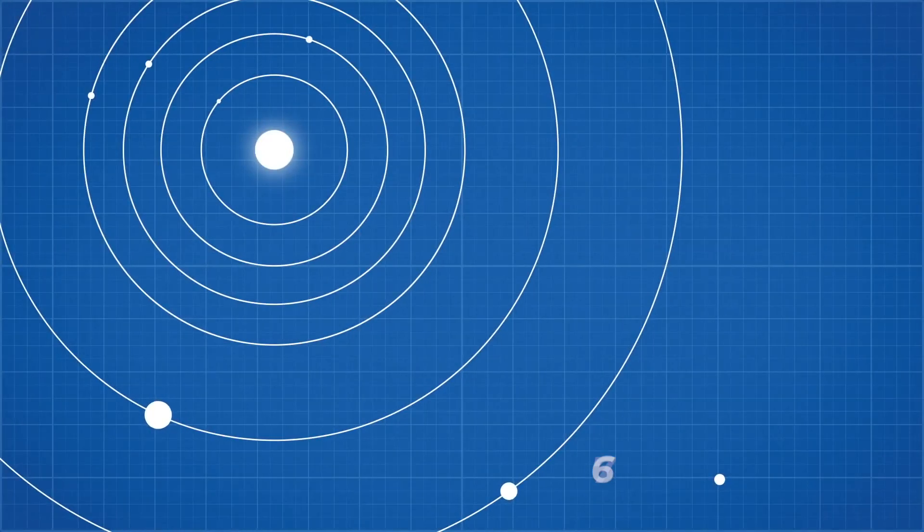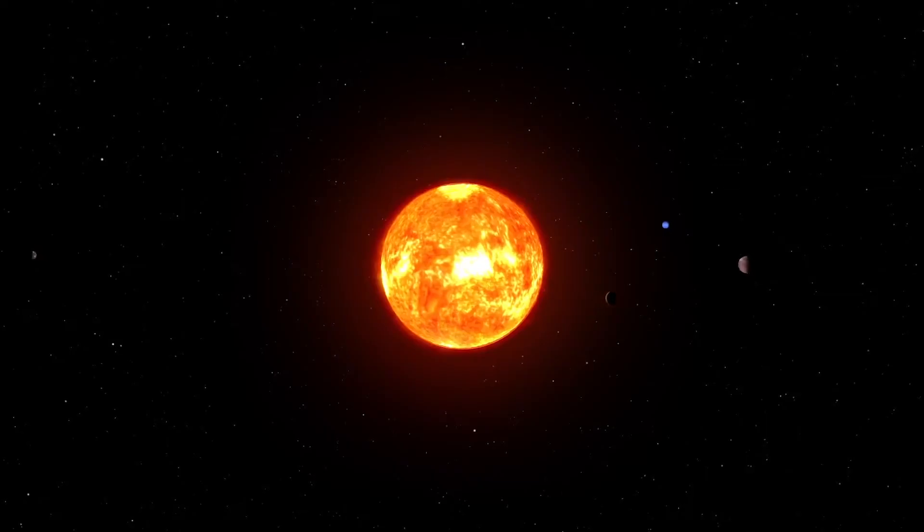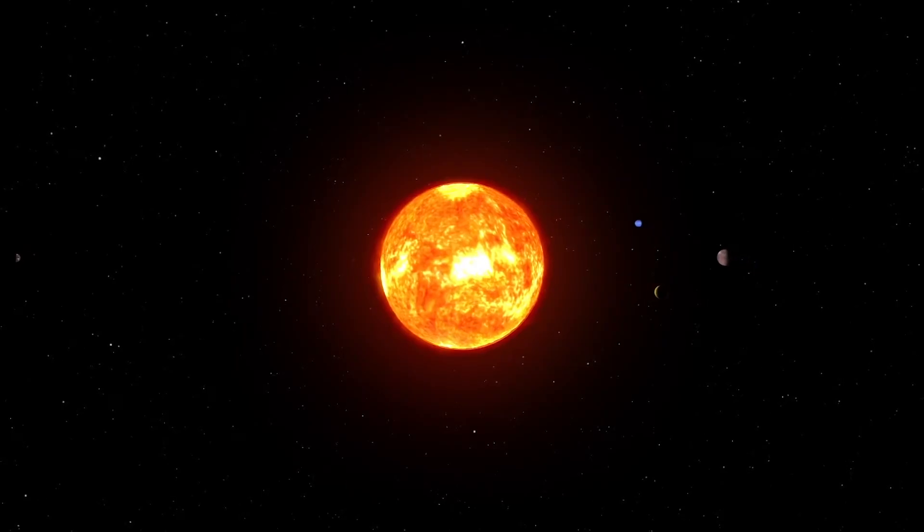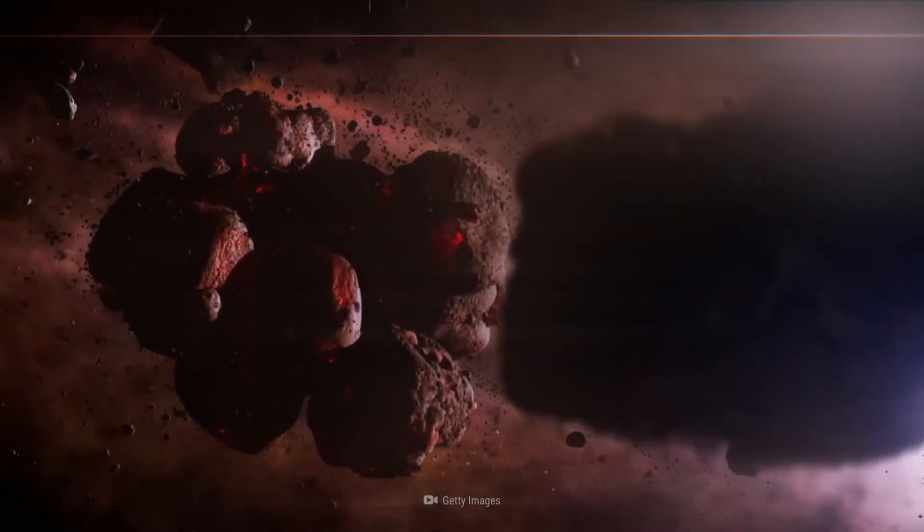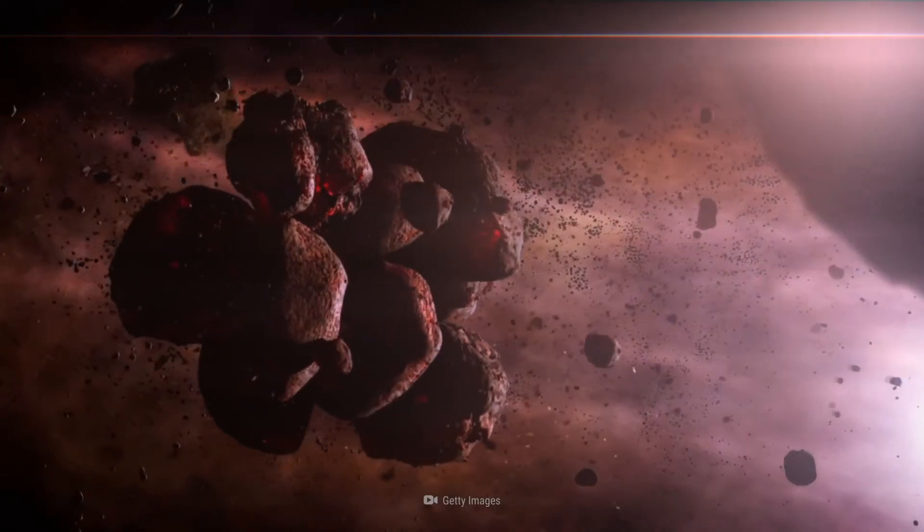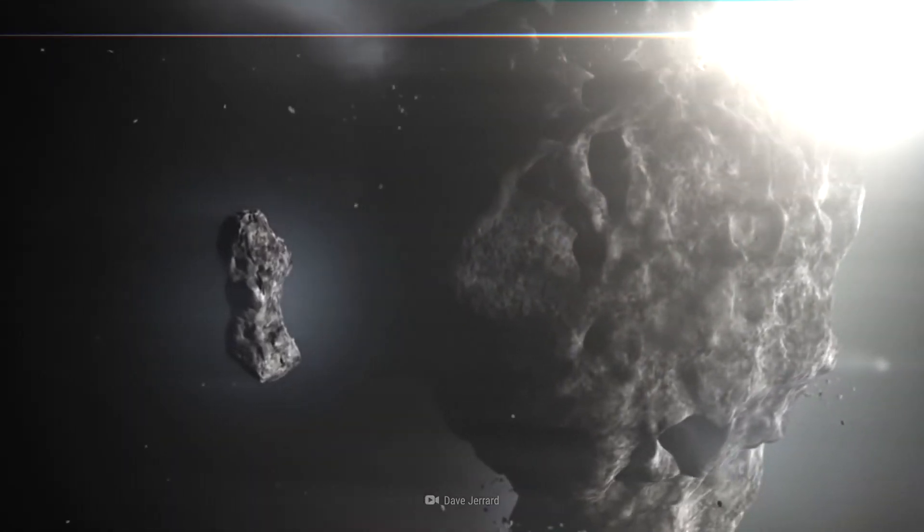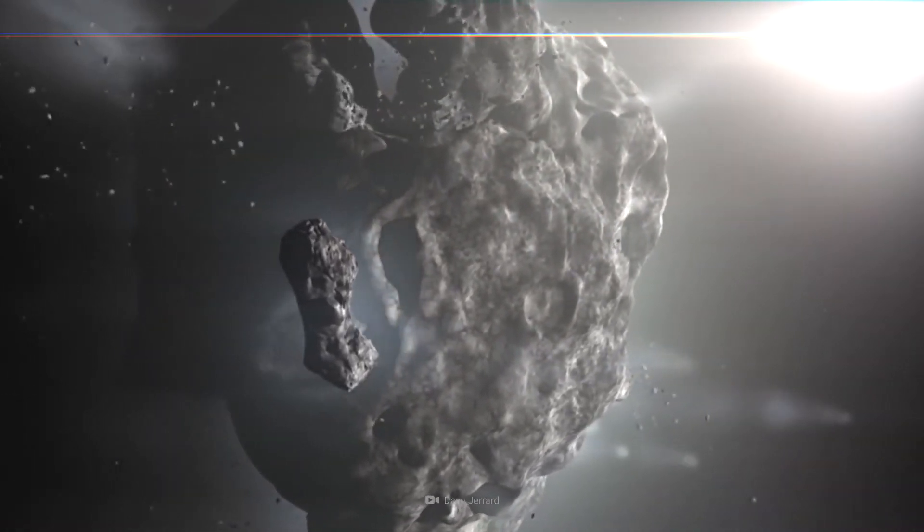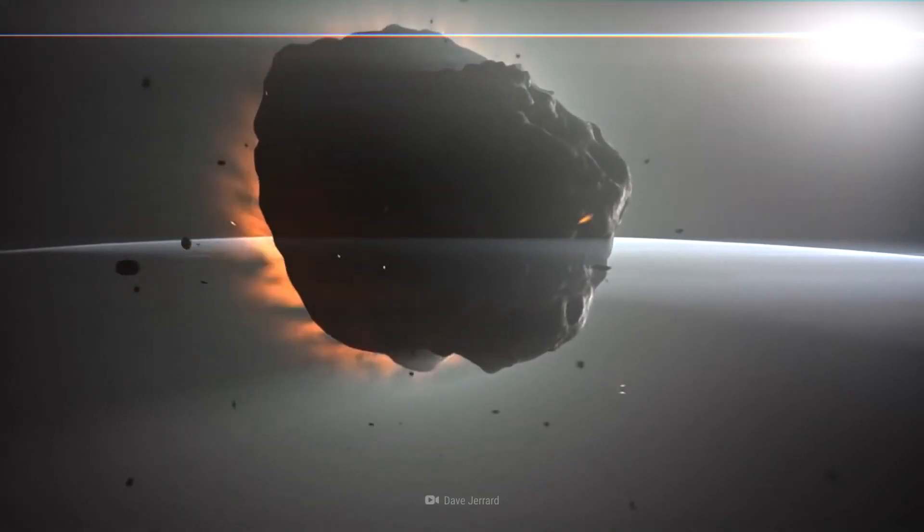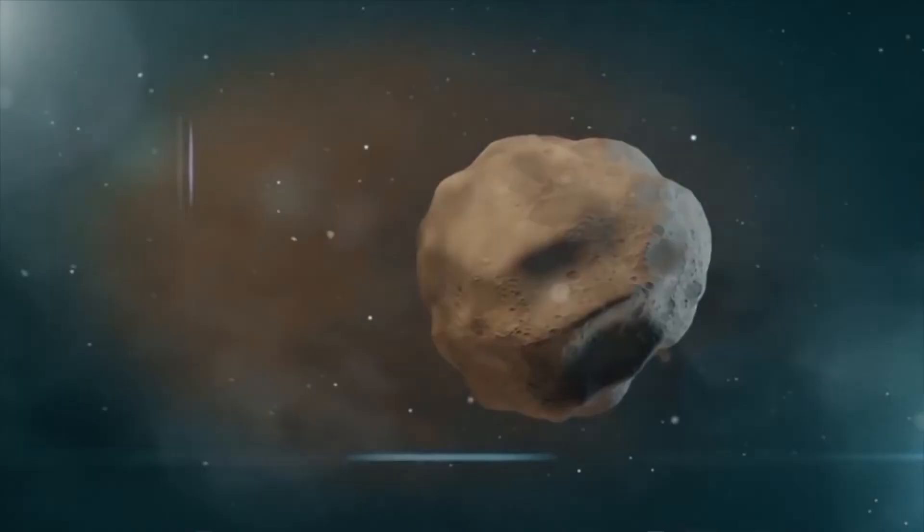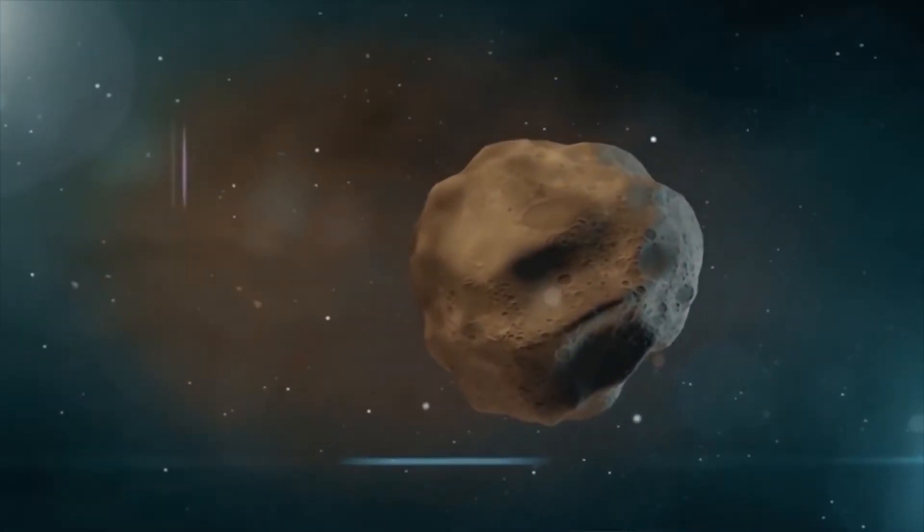Our solar system has been around for four and a half billion years, so the planets have all had a chance to find steady, stable orbits. But that wasn't always the case. Billions of years ago, the solar system would have been a much more chaotic place. The constant gravitational tug of war between the newly forming planets caused orbits to shift and change constantly, migrating inwards or outwards, seeking a more stable position.